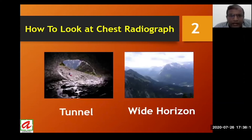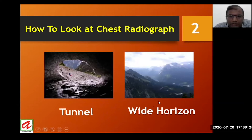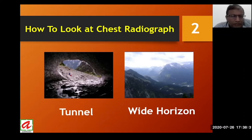First of all, while interpreting chest radiographs, we should remember that we should not just have tunnel vision — we should have a wide horizon. This means we have to look not only at the lung fields but also at all the surrounding structures including the mediastinum, hilum, the bony cage, and soft tissues, because these might give us an indirect indication of disease.